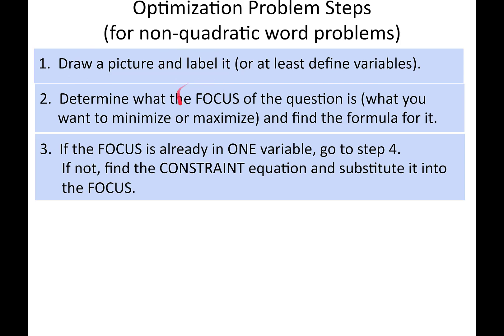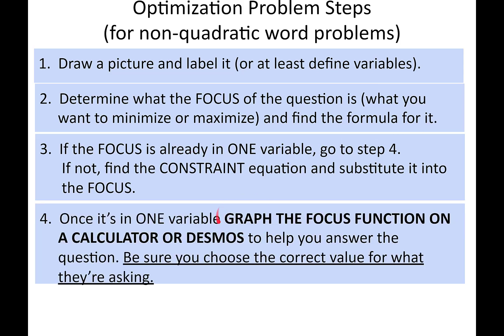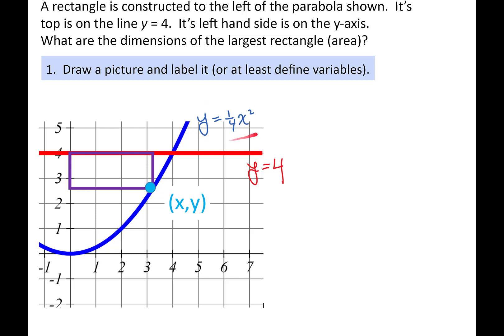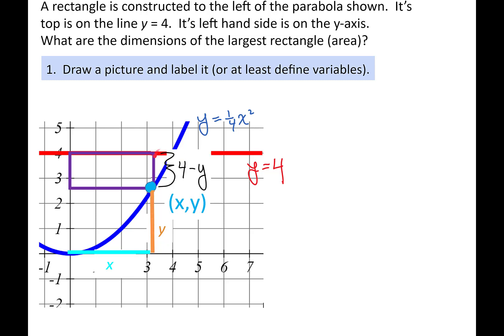Step 1: draw a picture and label it. We have the picture given to us, but we need to label it. Whenever you're given a formula or a graph, you almost always want to label the relevant point. This corner of the rectangle is important — we'll label it (x, y). That means this length from here to here is x, and the length from the point down to the x-axis is y. If that's y, then this length right here is 4 minus y. The length of the rectangle is x. Step 1 is done.